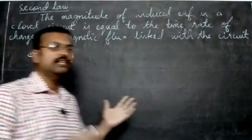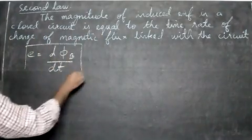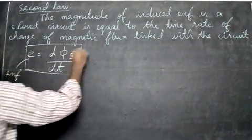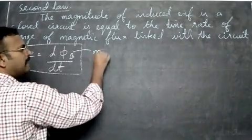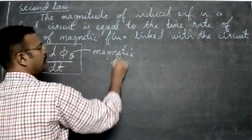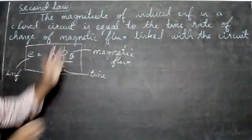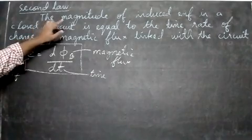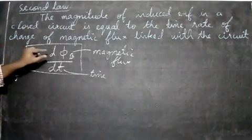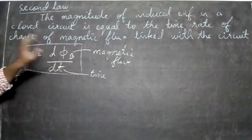Let us write what each term in this equation means. E means the EMF. ΦB means the magnetic flux. T means the time. So the magnitude of the induced EMF in a closed circuit is equal to the time rate of change of the magnetic flux linked to the circuit.